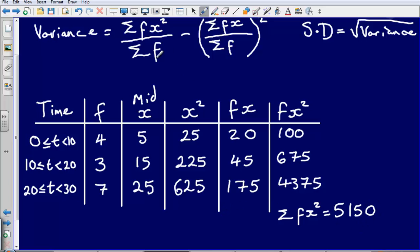Then I need to also work out the sum of f. So the sum of f, we can see here, is just the sum of this column, which is going to give me 14, 4 plus 3 plus 7.